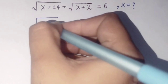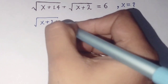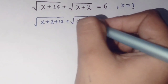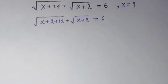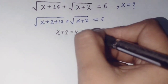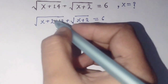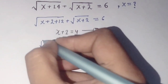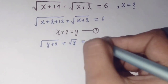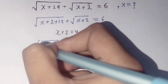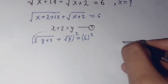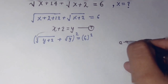For square root of (x + 14), I can write x + 2 + 12, so the equation becomes: square root of (x + 2 + 12) plus square root of (x + 2) equals 6. We let y = x + 2. Substituting into the equation gives: square root of (y + 12) plus square root of y equals 6. Now square both sides.